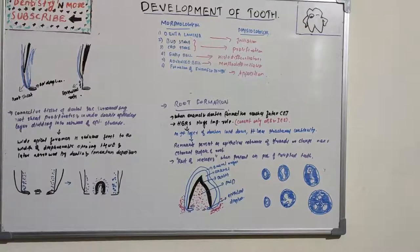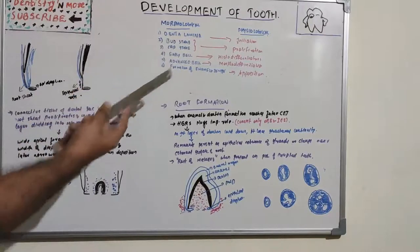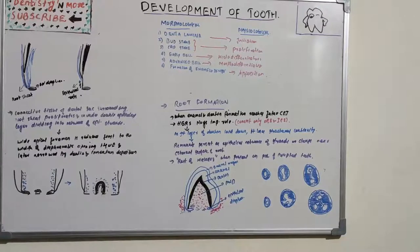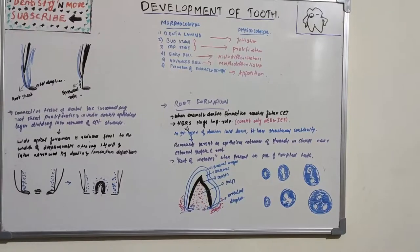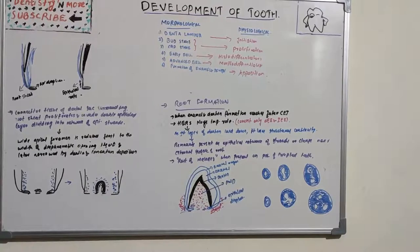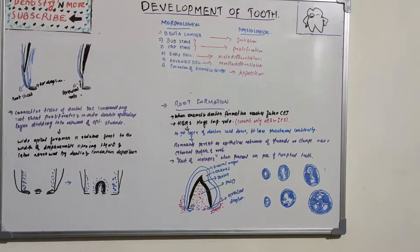Many exam questions come from this chapter — bud stage, cap stage, bell stage drawings, cell rests of Malassez, rests of Serres, enamel knot, enamel cord, outer enamel epithelium, and Hertwig's Epithelial Root Sheath are commonly asked as long essays. Every answer must be accompanied by a proper labeled diagram using hematoxylin-stained style diagrams, as answers without pictures will significantly reduce your marks.